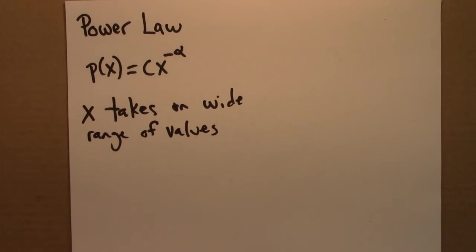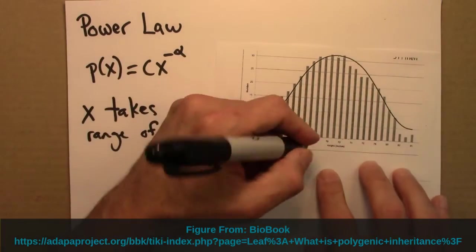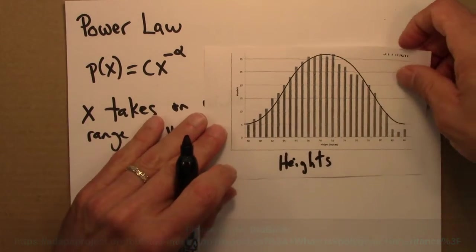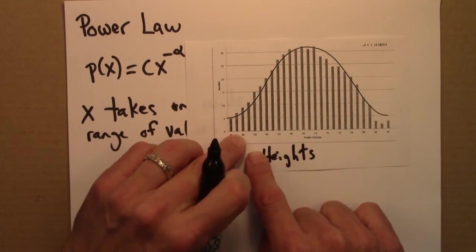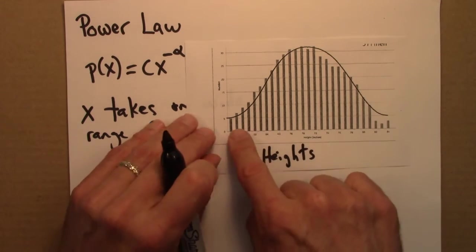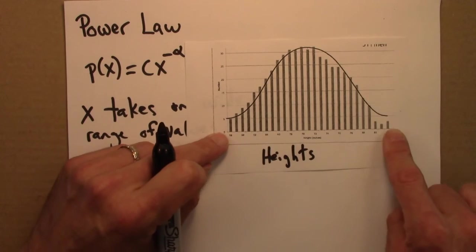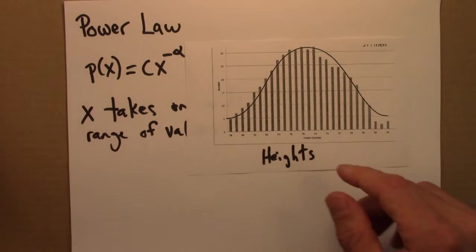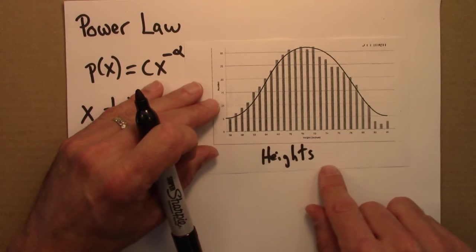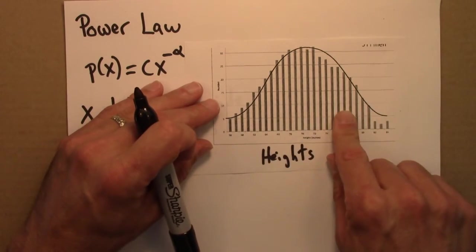In contrast, here's an example that is most definitely not power-law distributed: the heights of a little over 500 American men. The range is very small — from 58 to 84 inches. This is an example of a situation well approximated by a Gaussian curve, or normal distribution.